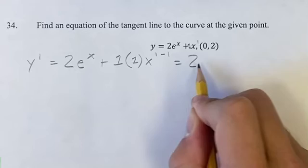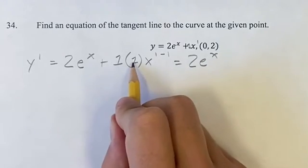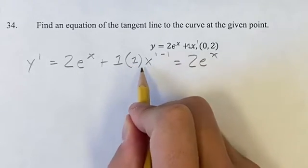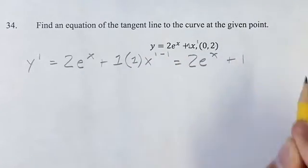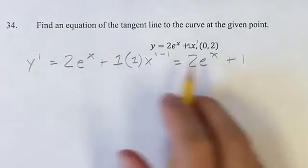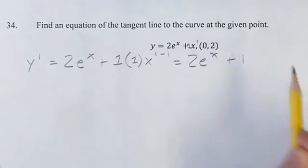So this new derivative is going to be 2e to the x plus 1 times x to the 0. Anything to the 0 is just 1, so 1 times 1 is 1. So this is our general derivative, but we want to find what the slope is at this point.